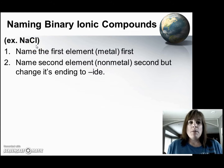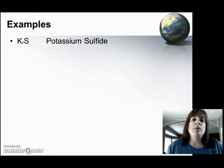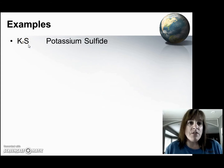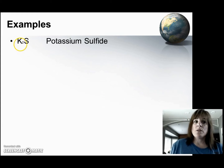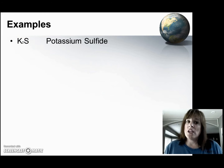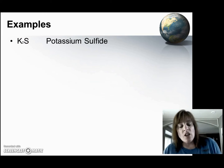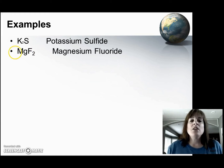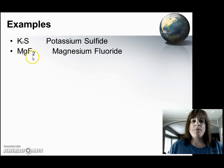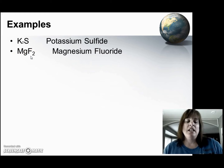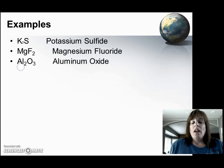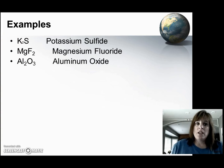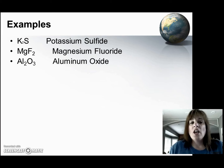Let's take a look at a couple of examples. Here is the element potassium with the element sulfur. Name the first one first — potassium — and name the second one but change the ending to IDE, so we get potassium sulfide. Here's another one: name the first element first, that's magnesium, name the second element and change its ending to IDE, so this is magnesium fluoride. What about this one? First element is aluminum, second element is oxygen, change the ending — so we get aluminum oxide.